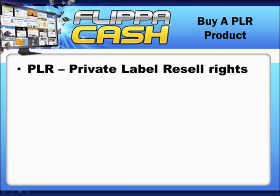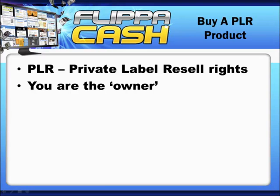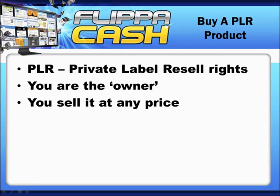Understand that when you buy a private label rights product, you are the owner — it is your product. It's totally ethical and totally legal to put your name on it, or a pen name, or somebody else's name if you want. You do need to check the terms when you buy PLR products because there are master rights, regular PLR, and different versions that give you different levels of what you can do. A nice thing about PLR versus being an affiliate is that you set the price — the vendor doesn't.